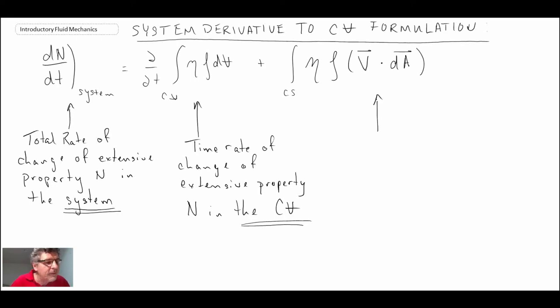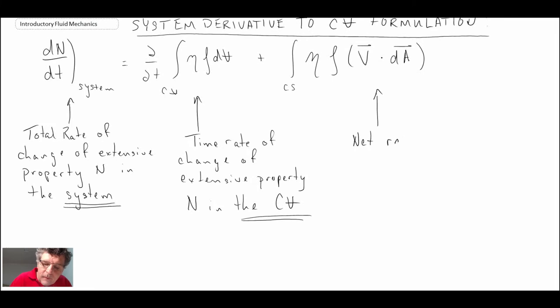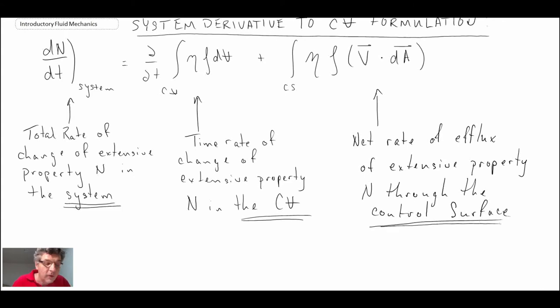And then the last term is the net rate of flux of that property into or out of the control volume. And this is with respect to the control surface.